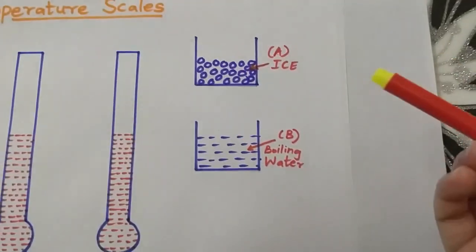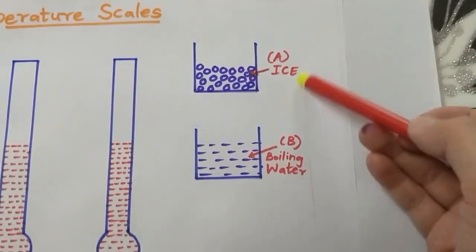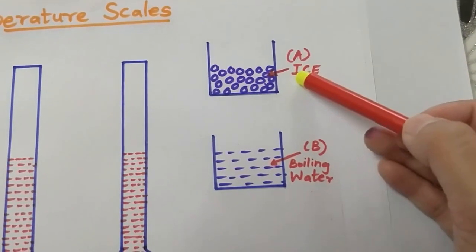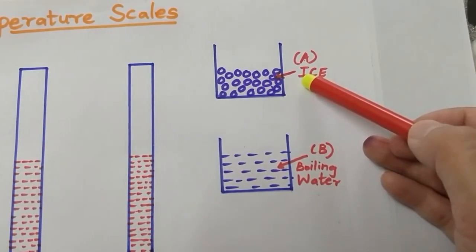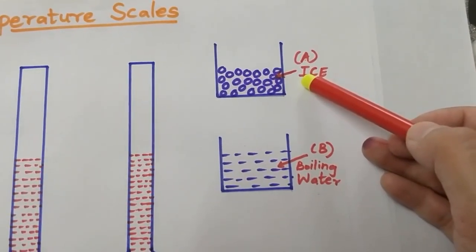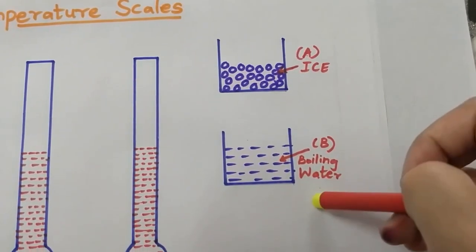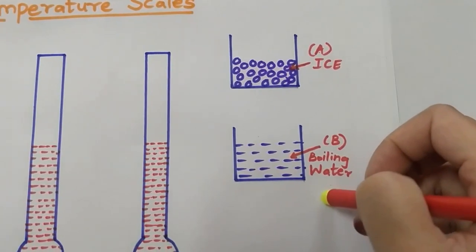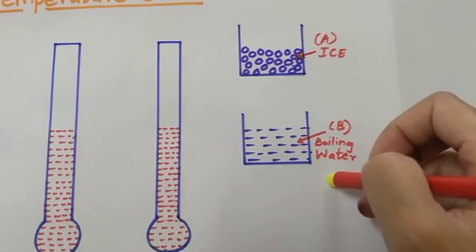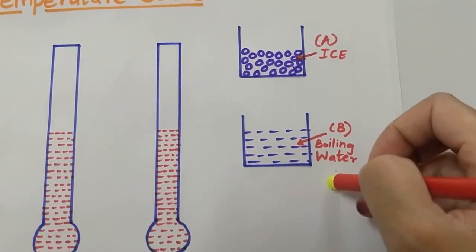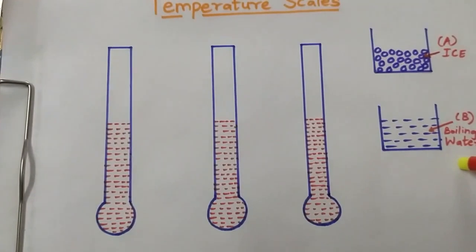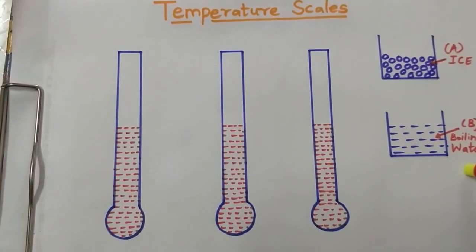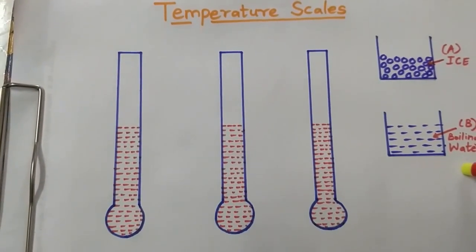Here we have two beakers A and B. One of the beakers contains ice and the other beaker contains boiling water. So now we will study how degree Celsius, degree Fahrenheit, and Kelvin temperature scales are calibrated.